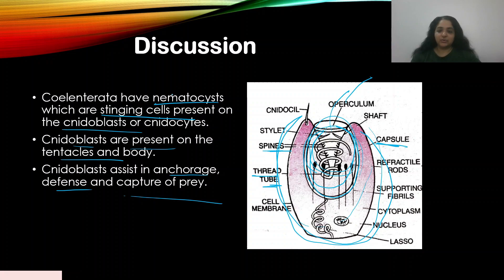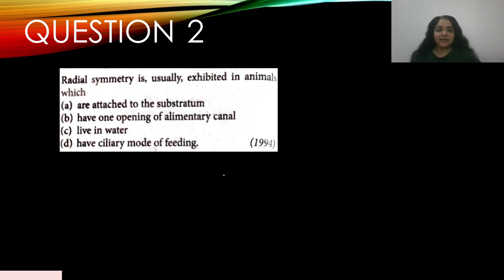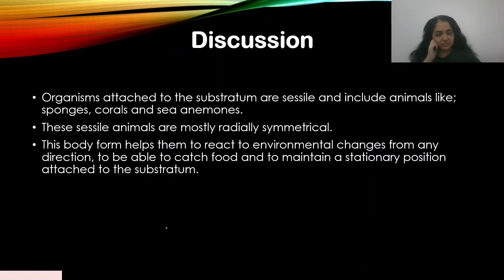Question number two: radial symmetry is usually exhibited in animals which — appeared in 1994 — A) are attached to the substratum, B) have one opening of the alimentary canal, C) live in water, D) have a ciliary mode of feeding. Radial symmetry is usually seen in animals that are sessile — attached to the bottom — for example starfish and hydra. The answer is A.